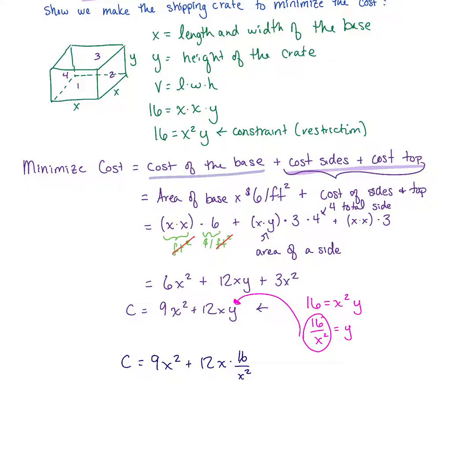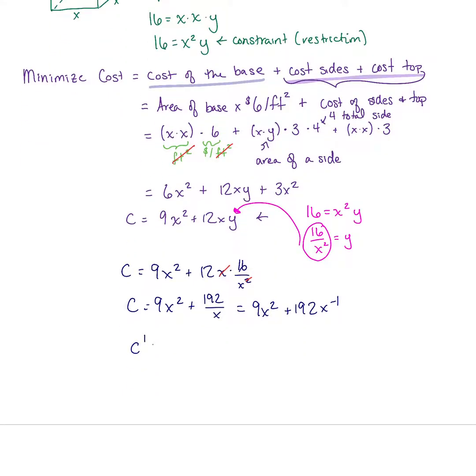We've got an x on the top and x squared on the bottom so we can cancel one. We also do 12 times 16 and that gives us 192. We have 9x squared plus 192 over x. To take the derivative, it's easier to write this as 9x squared plus 192 times x to the negative one.